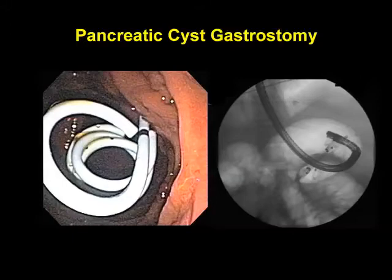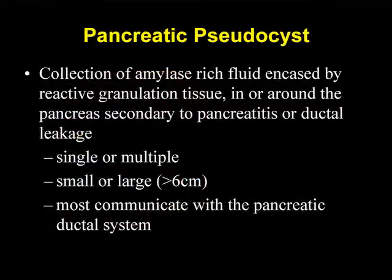When evaluating someone for a pancreatic pseudocyst, the first thing you want to consider is the alternative diagnosis — is this, in fact, not a pseudocyst but a neoplastic cyst? Many times that can be done with a CT scan. The important thing is the history: you want someone who has had an episode of pancreatitis or has chronic pancreatitis. If there's any question following the CT scan, an MR can be very helpful. And if a question remains, it's reasonable to proceed with an endoscopic ultrasound to help differentiate.